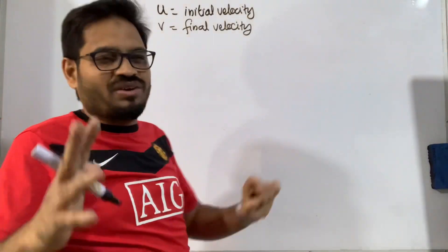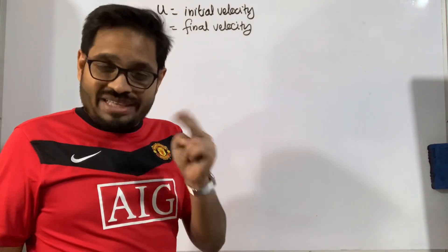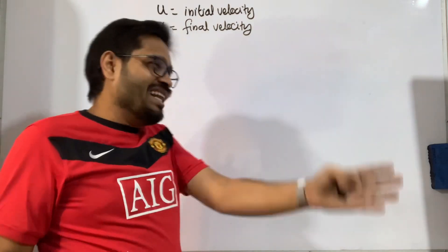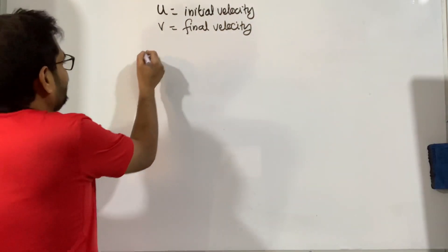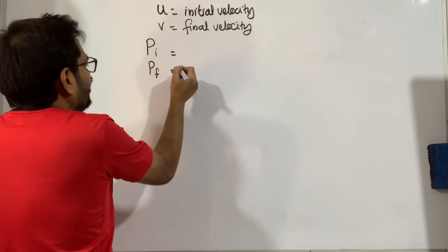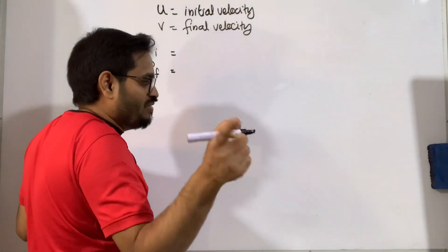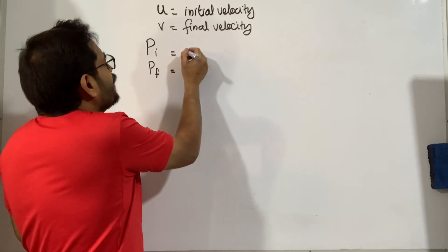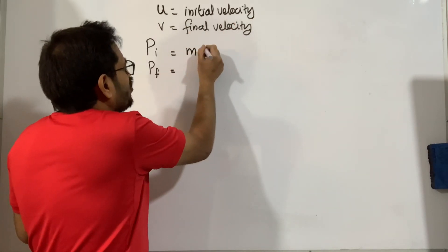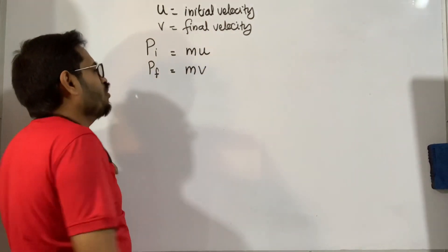Now, in the same way we have initial and final velocities, let us take initial and final momentum. Initial momentum is pi and final momentum is pf. Momentum is mass into velocity — p = mv. So initial momentum is m into u, and final momentum is m into v.